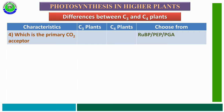The fourth characteristic feature is which is the primary CO2 acceptor. The options are RuBP, PEP, or PGA. In C3 plants, RuBP (ribulose bisphosphate) acts as the primary CO2 acceptor. But in C4 plants, PEP (phosphoenolpyruvate) acts as the primary CO2 acceptor.